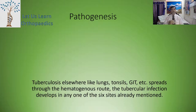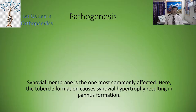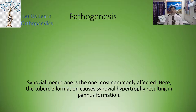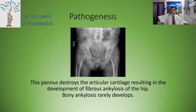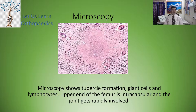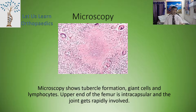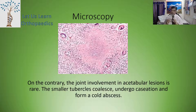The tuberculosis infection develops in any one of those six sites we just mentioned. The synovial membrane is one of the most commonly affected, and here the tubercle formation causes synovial hypertrophy resulting in pannus formation. This pannus destroys the articular cartilage, resulting in the development of fibrous ankylosis of the hip. Bony ankylosis rarely develops. Microscopy shows tubercle formation, giant cells, and lymphocytes. The upper end of the femur is intra-articular and intracapsular, and hence whenever it is involved the joint gets rapidly involved. On the contrary, joint involvement in the acetabular lesion is very rare.